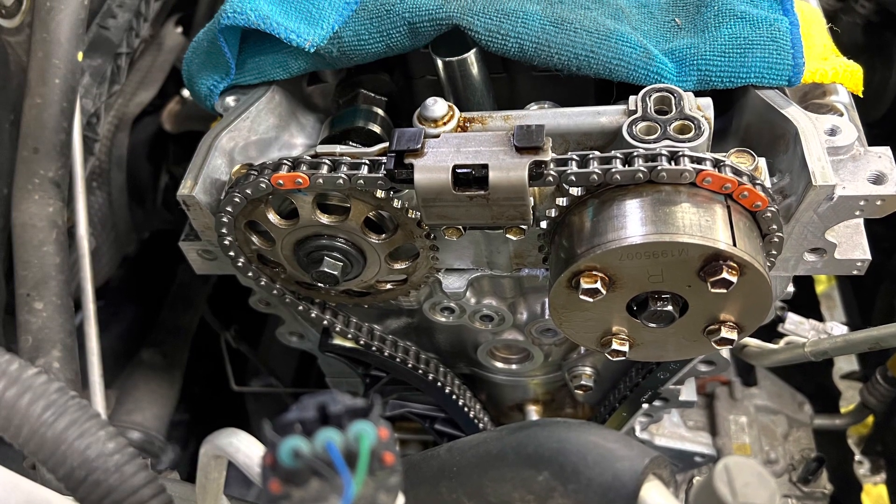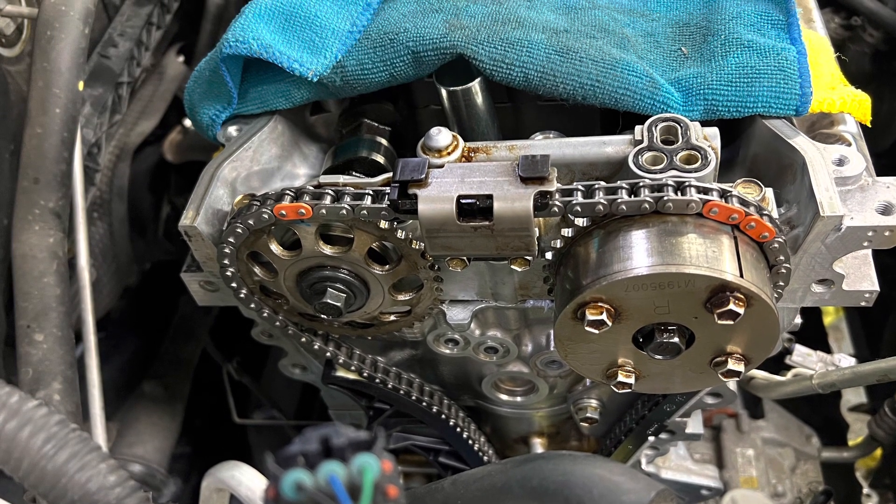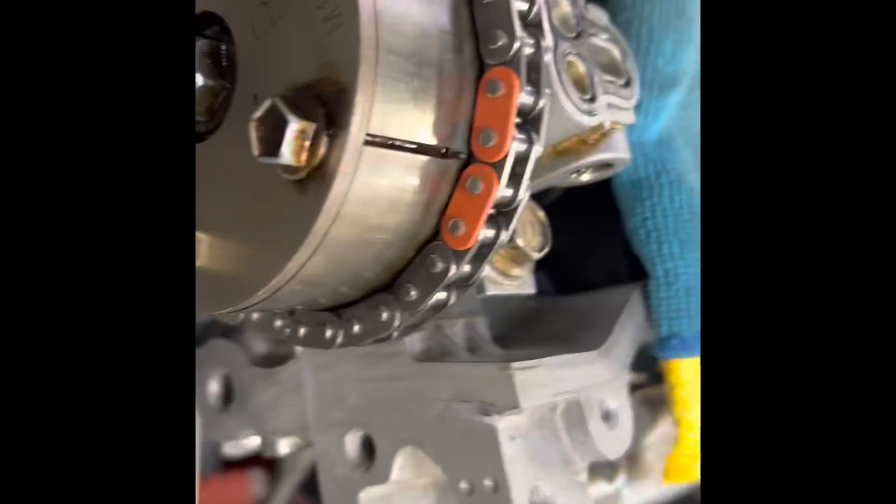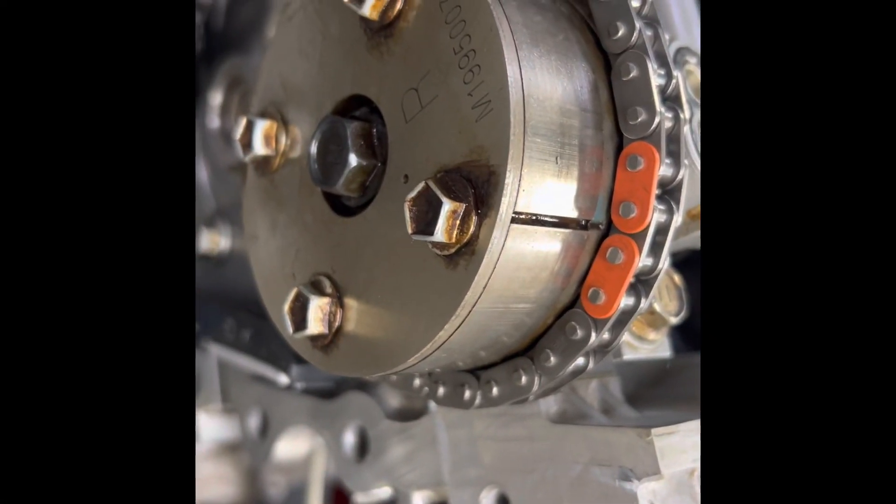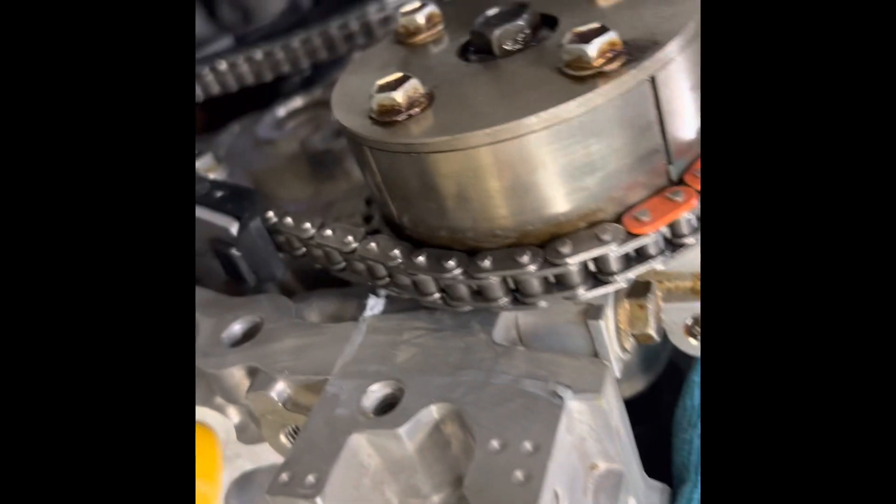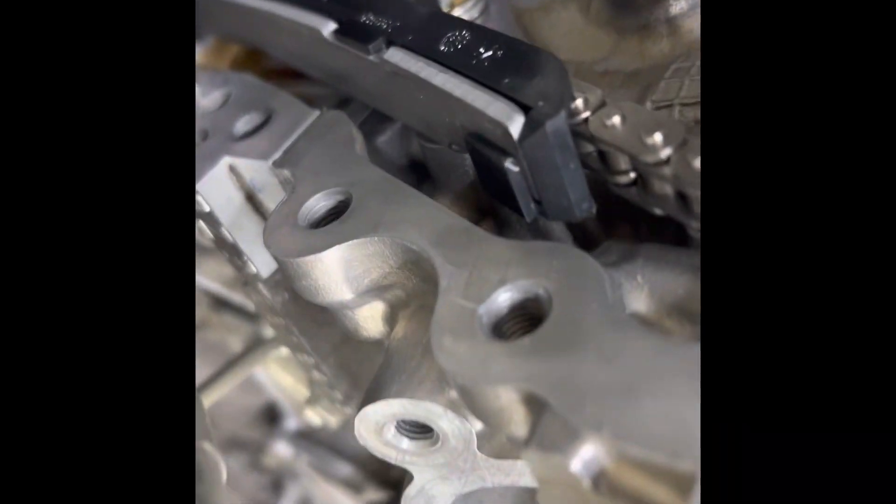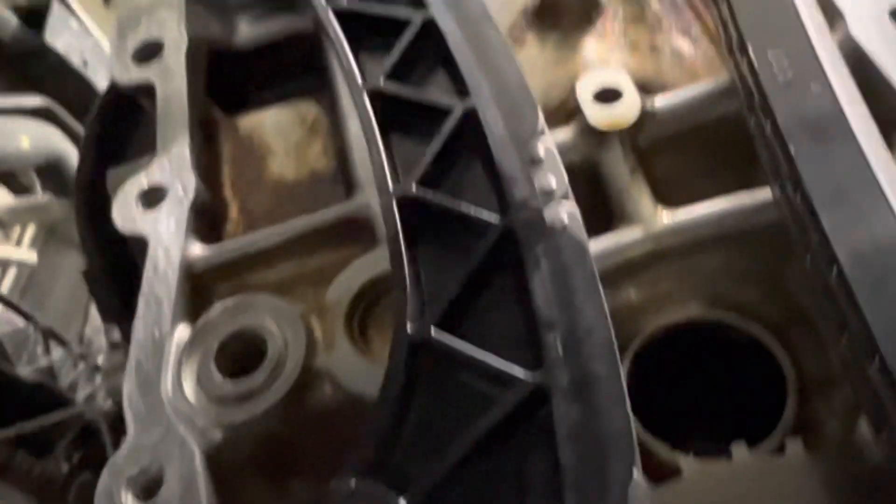Here are the alignment marks for a 2013 Prius timing chain. I'm showing here the right side camshaft, which is the intake camshaft, and here is the chain guide. Then the left camshaft, which is also the exhaust camshaft. This is the crankshaft. You see the chain has two orange colored chain links.